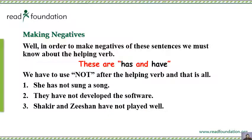The next thing you have to do is make negative sentences. You need to know the helping verb. If the subject is singular, the helping verb is 'has'. If the subject is plural, the helping verb is 'have'. To make a negative, you simply add 'not' after the helping verb.